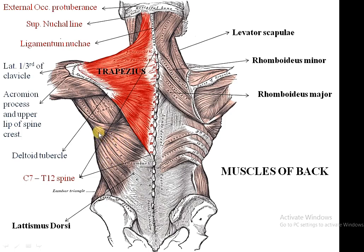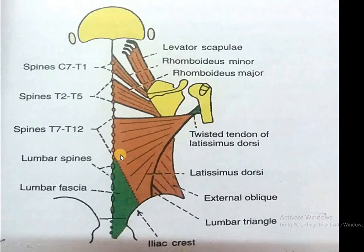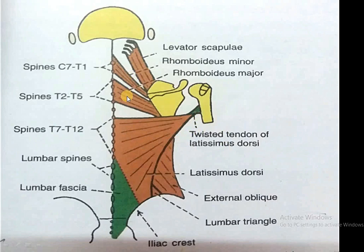The latissimus dorsi inserts into the floor of the intertubercular sulcus. It also forms the boundary of the axilla — specifically the posterior fold of the axilla. We also have the smaller muscles: rhomboidus minor and rhomboidus major.